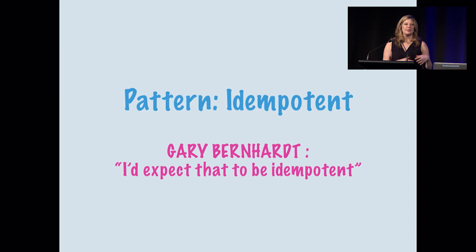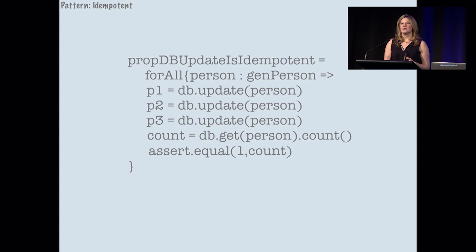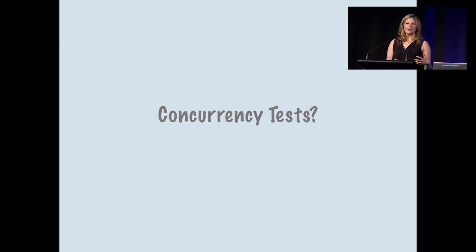Our next pattern is idempotent. If you heard Gary's talk this morning, he said more things should be idempotent — we should be thinking about this property in our system. How do you test it? You can write property-based tests that run the same thing over and over again in different situations with different generated scenarios. In this situation, we're just updating something — if we update something three times to the exact same thing, you should still only have one thing and it should be the same as when you updated it.